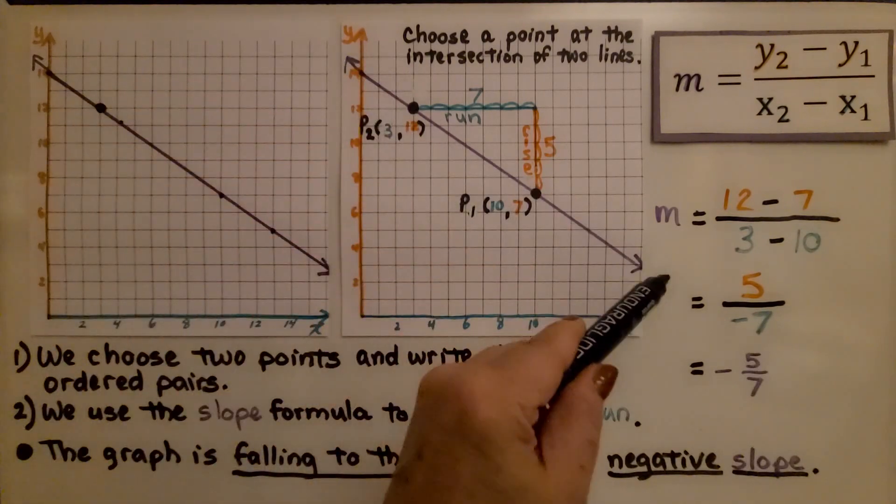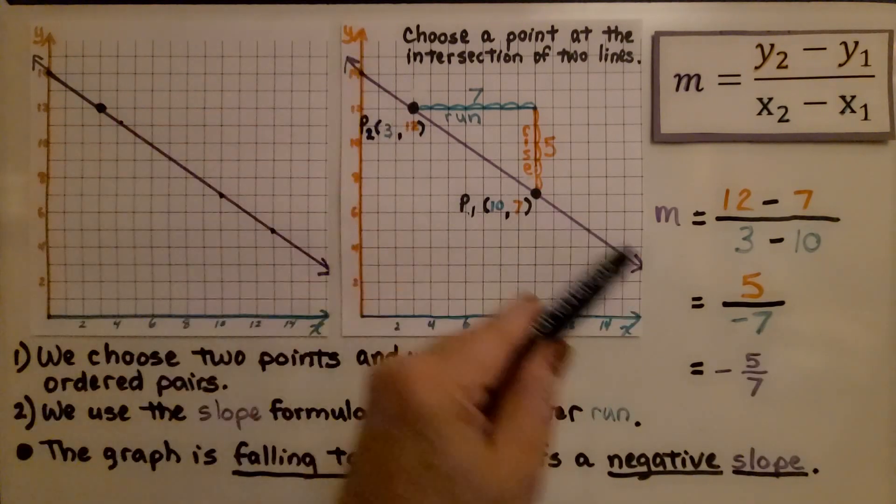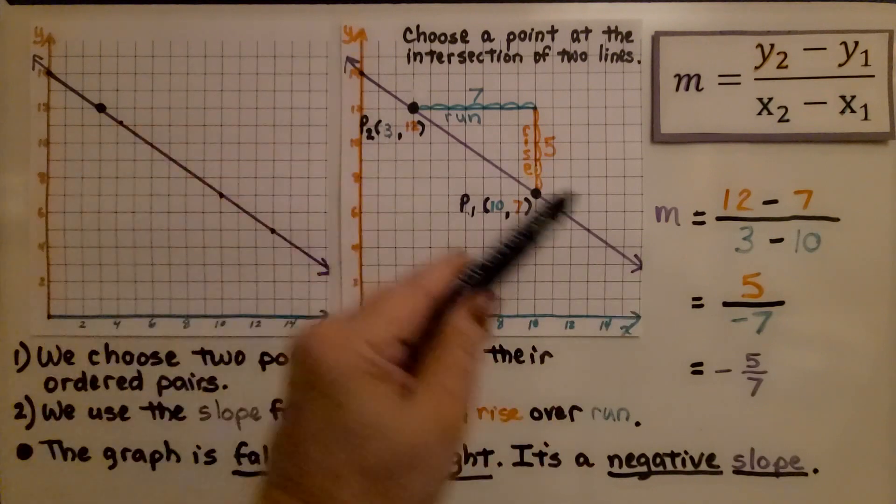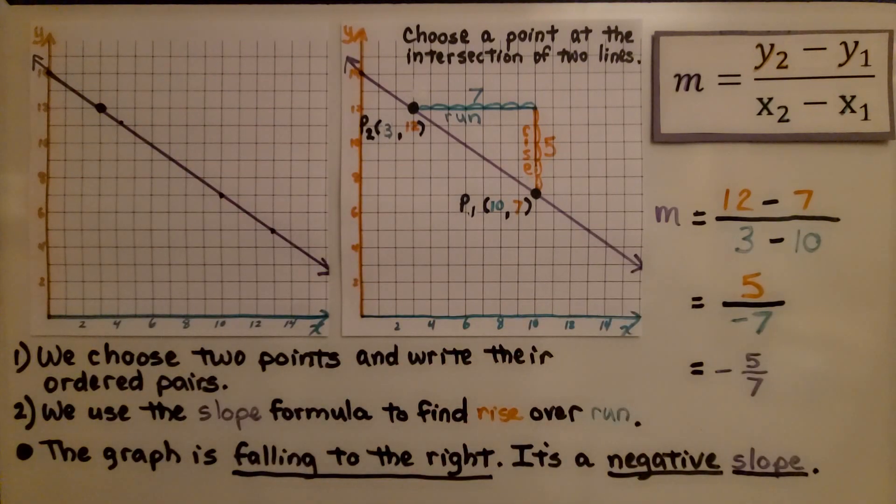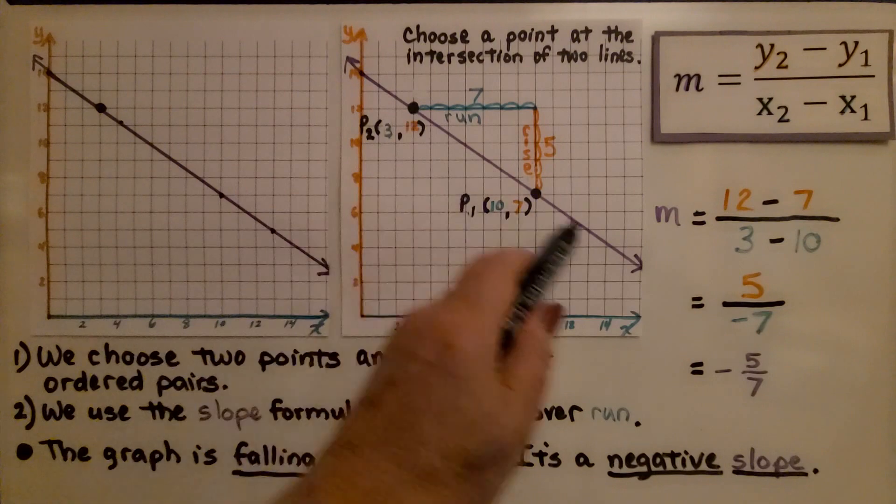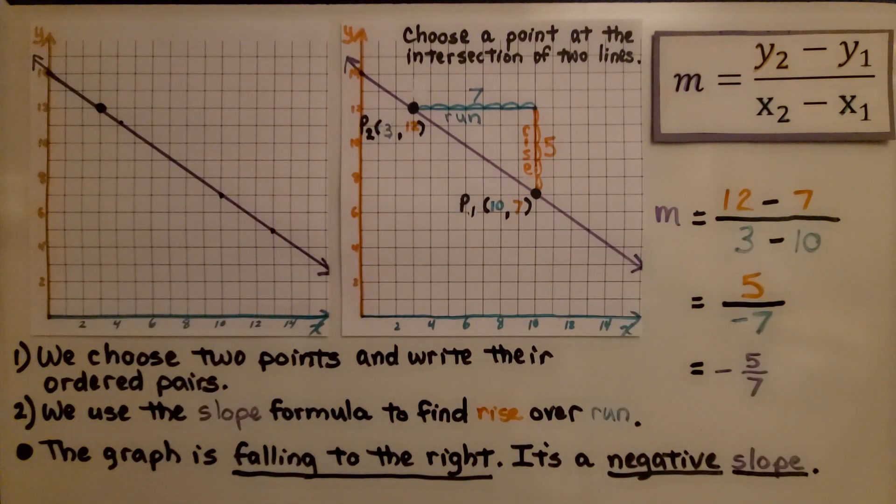Now if you notice this line is falling to the right, we know before we even started finding the slope that we're going to have a negative number, and we do. We have negative 5 sevenths. The graph is falling to the right. It's a negative slope. Before we even began, we knew we would have a negative number. If we don't get a negative number and this line is falling, we know we didn't do it correctly.